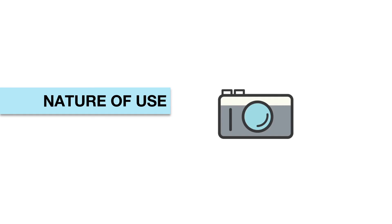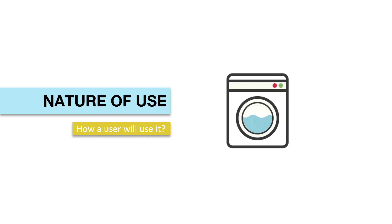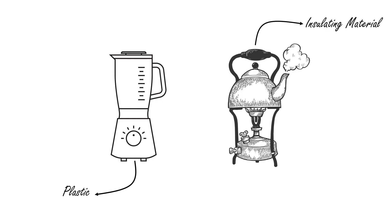The first parameter we should understand is the nature of use. While designing a product, ask yourself how a user is going to use this product. Does the product require use of electricity or heat, or is it going to be used in some other extraordinary conditions? This can change the material that should be used in each case. You must have observed the insulating material on utensils, or the use of plastics in electrical appliances.